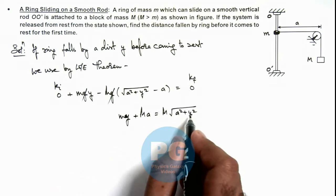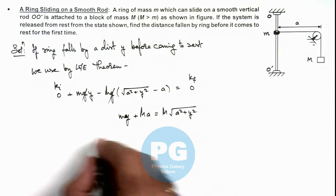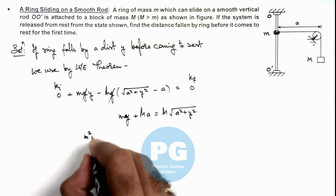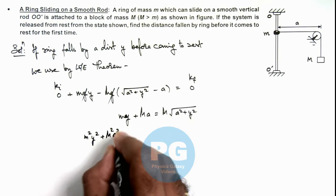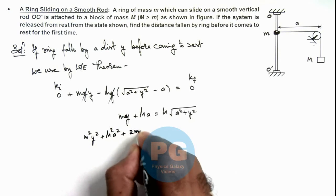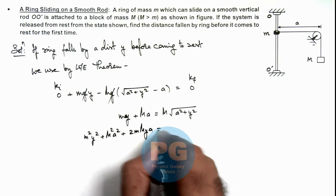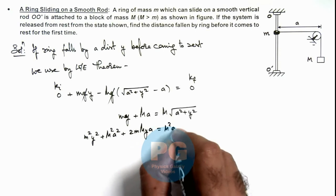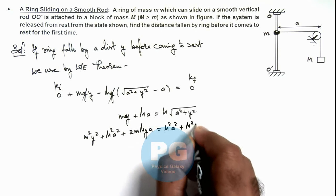Now if we square the left hand side and right hand side of equality this will be m square y square plus M square ay square plus 2 m M y ay is equal to M square ay square plus M square y square.